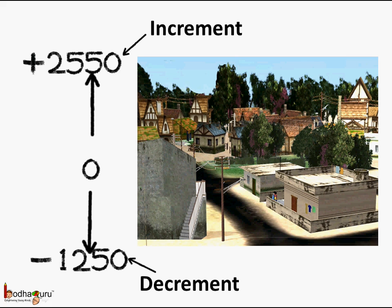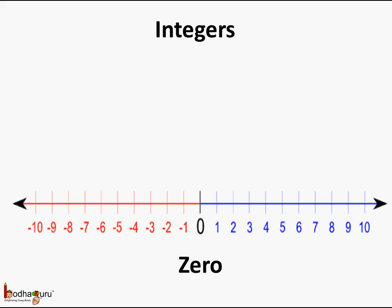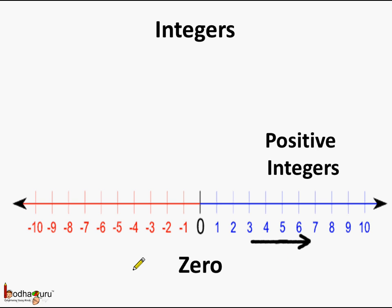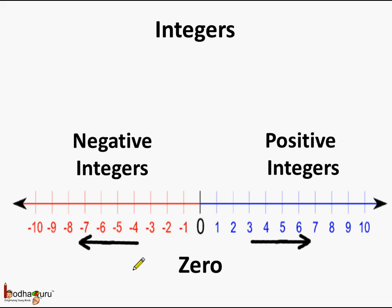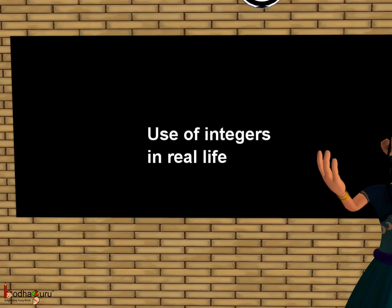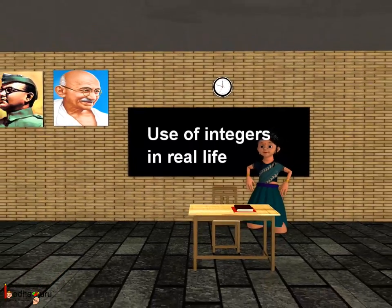So we saw that integers are used in our day-to-day lives to represent opposite things, like increase or decrease in population, to show height or depth, etc. To sum up — integers is a collection of whole numbers, that is zero and counting numbers like 1, 2, 3, 4 which are positive integers, and the negative integers which are minus 1, minus 2, minus 3, minus 4, etc. That was all about the use of integers in our real life. Bye-bye children.